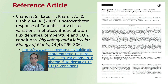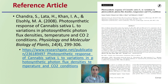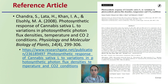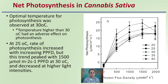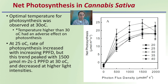This reference article looks at the photosynthetic response of cannabis in relation to variations in photosynthetic photon flux densities, temperature, and carbon dioxide conditions — you're welcome to check it out for more details. Looking at net photosynthesis specifically in cannabis, the optimum temperature for photosynthesis is around 30 degrees Celsius.